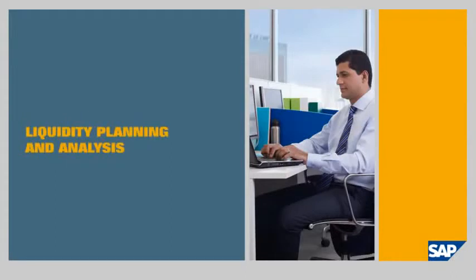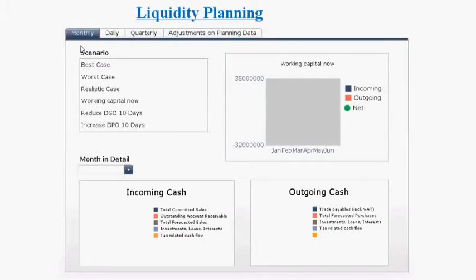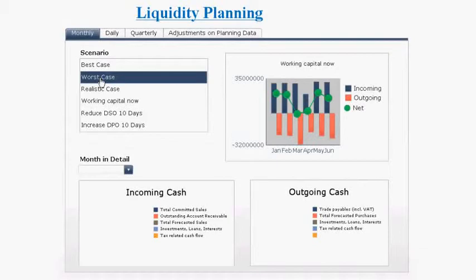Liquidity Planning and Analysis. Once my manager receives the email, he opens the attached PowerPoint and analyzes the liquidity plan. Using the tabs at the top, he can instantly see monthly, daily, and quarterly views of liquidity information, as well as different scenarios such as the best case, worst case, and realistic case scenarios. He first chooses the worst case scenario. The right-hand chart automatically illustrates the expected scenario from an incoming, outgoing, and net cash flow perspective for the next six months. He sees that in March we will have a negative net cash flow.